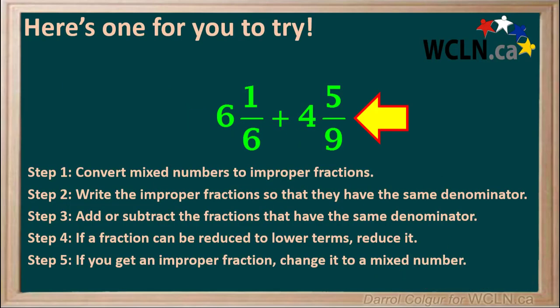Here's an example for you to try: 6 and 1 sixths plus 4 and 5 ninths. We've listed the steps here to guide you through the process. At this point, pause the video and work through this example on your own, right to the end. Then resume the video and check your answer.